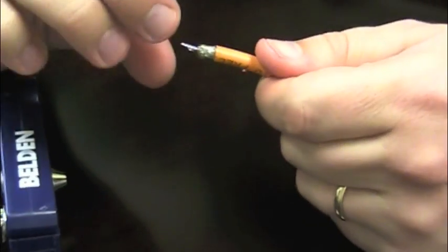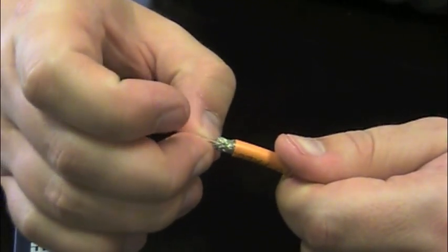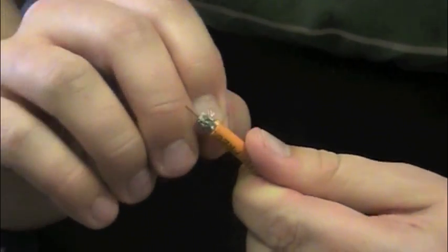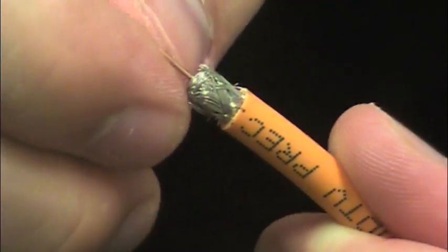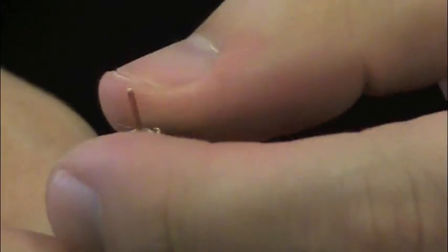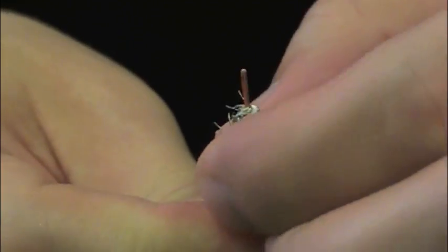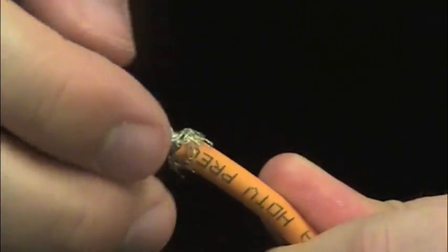Now what you want to make sure is there was some braid shield that was left on here. You want to make sure that nothing is touching the center conductor. So in this case, there's a little bit wrapped around, so you're going to want to go ahead and make sure that all that's pulled off the center conductor, because that'll create a short. And while doing that, you want to make sure you fold the braid back down over the jacket. So we're just going to go ahead and do that. There's really no trick to this. You just kind of pull it with your fingers and get it over the jacket and push it down as much as possible.